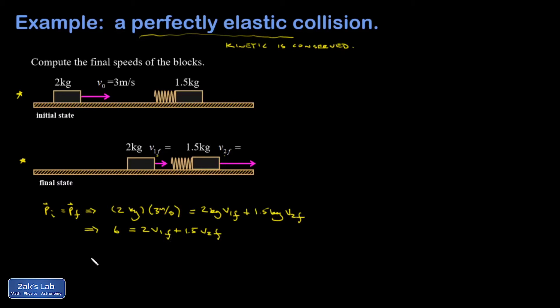So six is equal to 2v1f plus 1.5v2f. It might be nice to multiply that by two just to get rid of the decimal, so I have 12 equals 4v1f plus 3v2f.